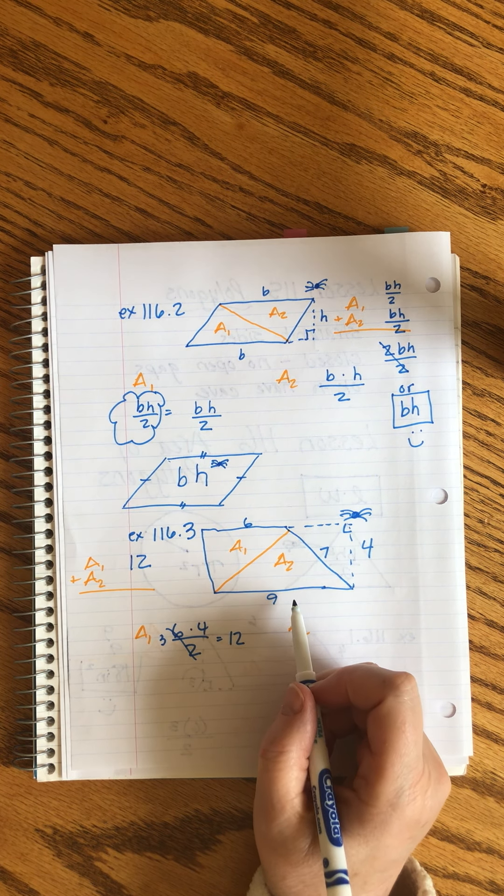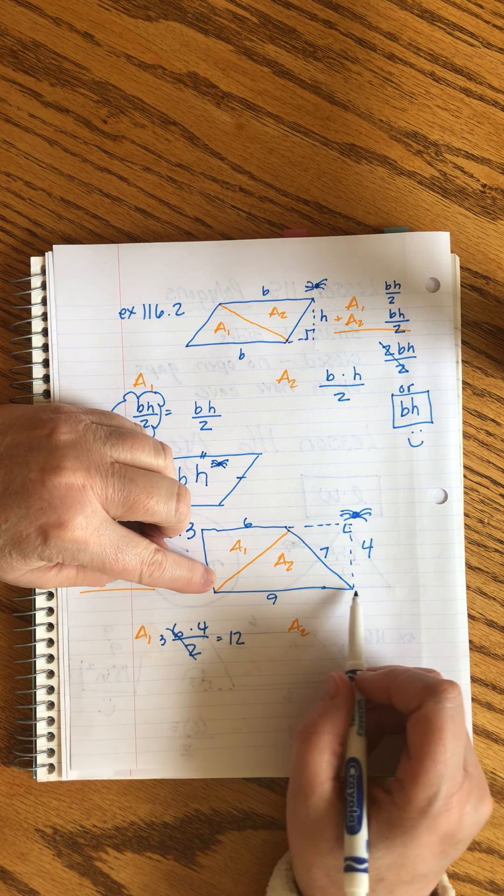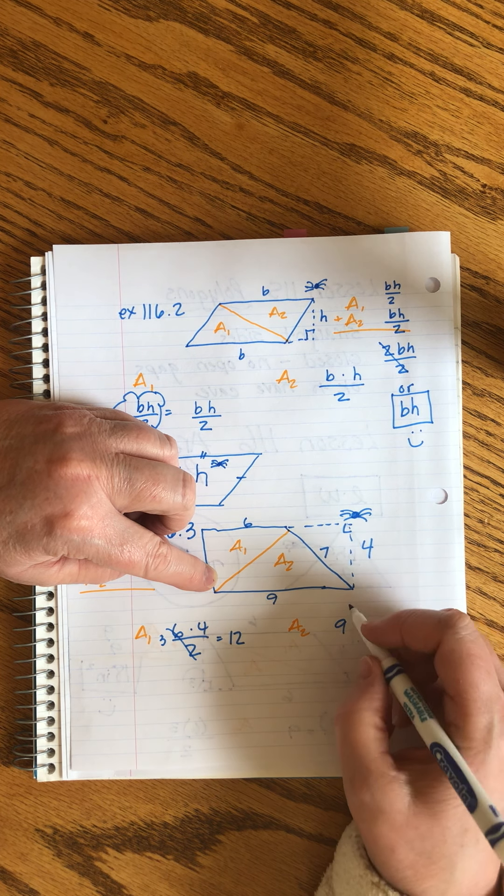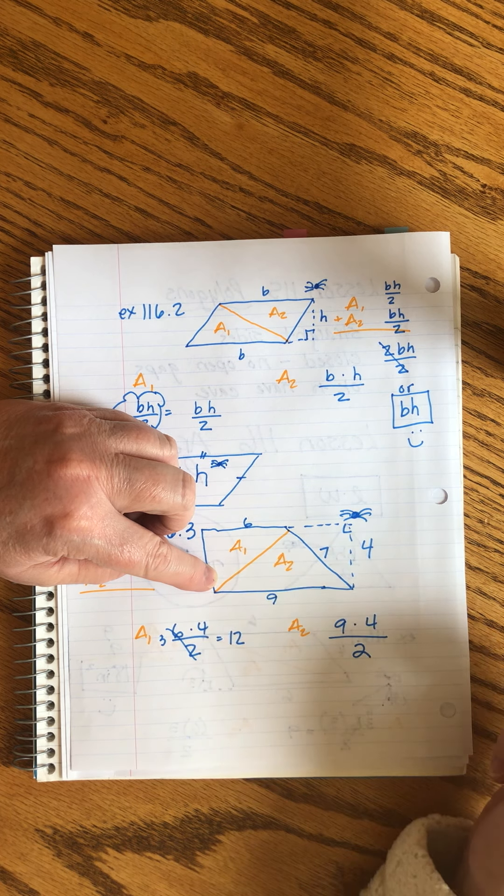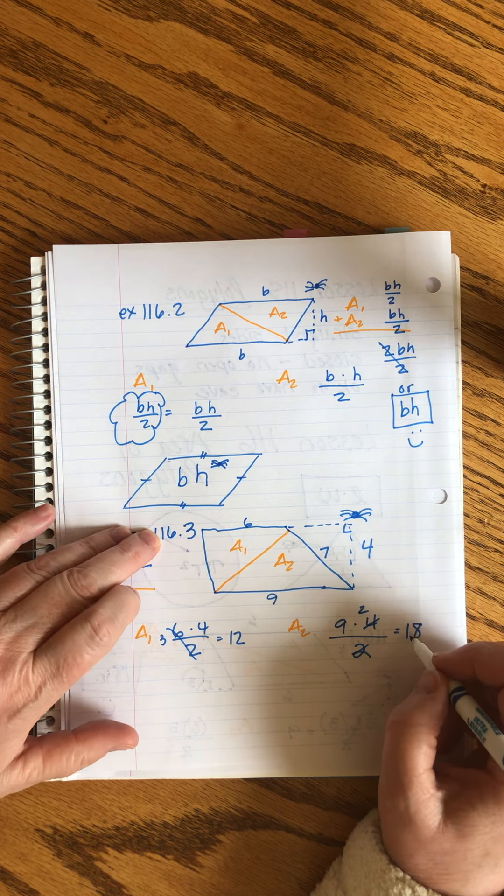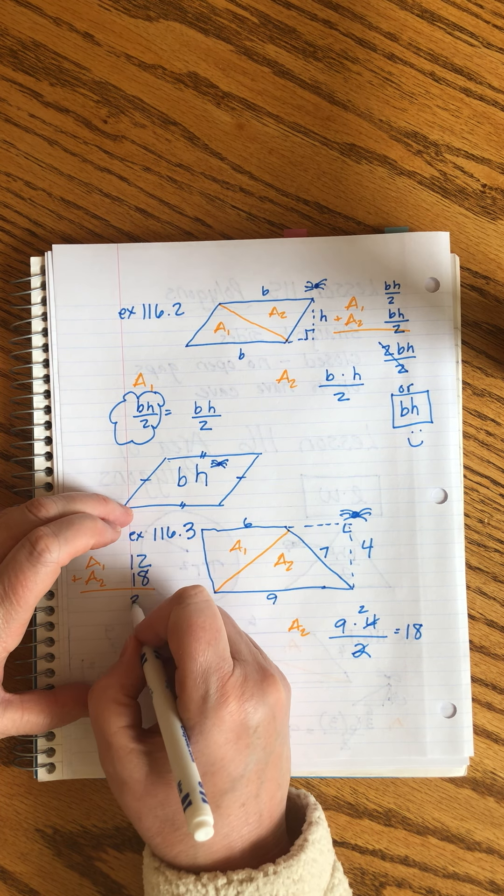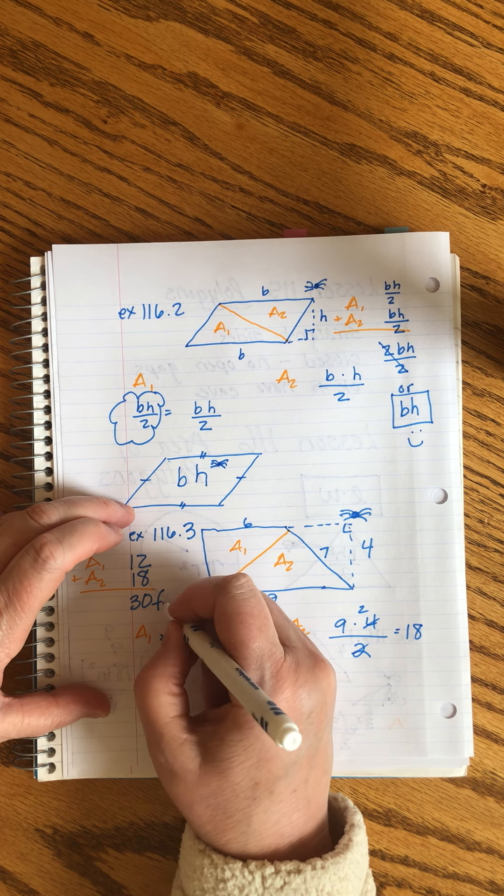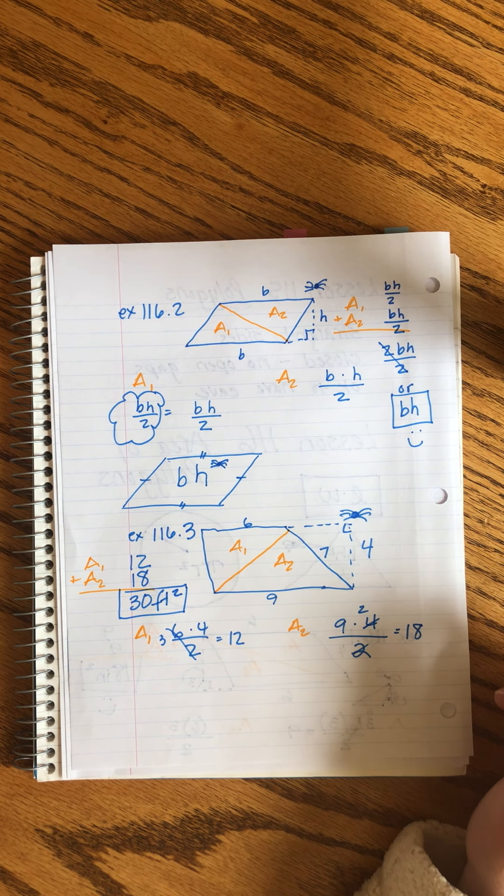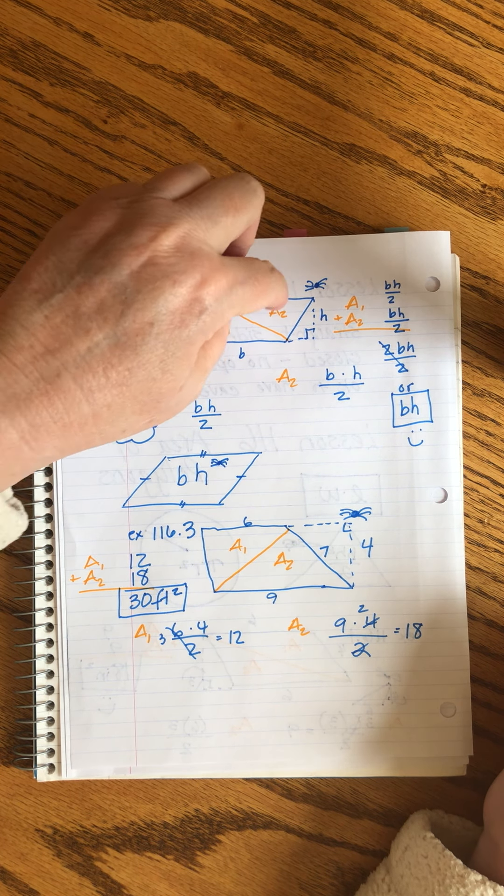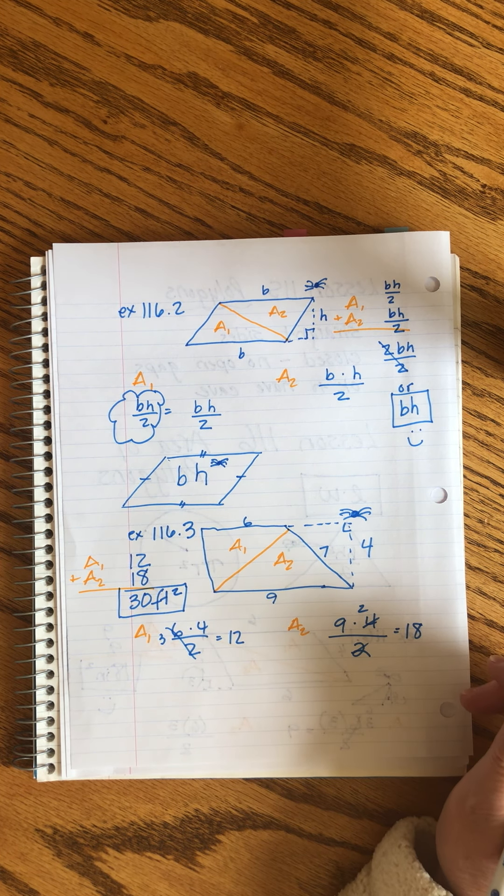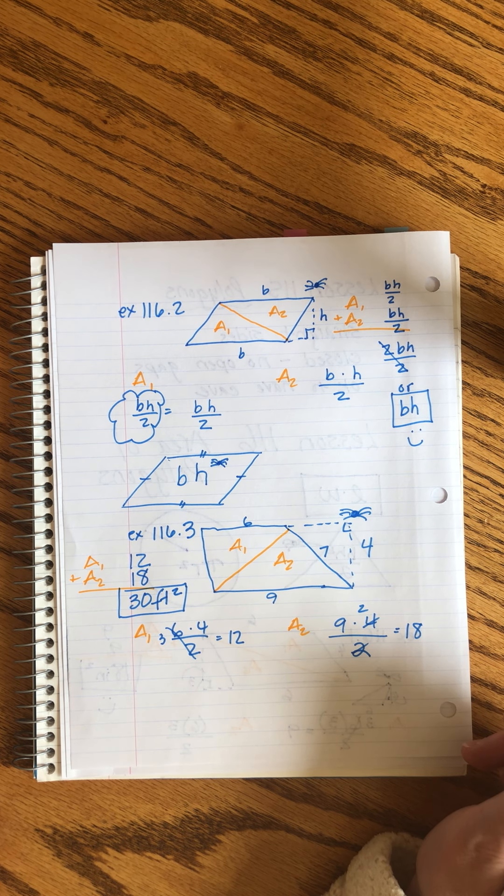This one. Now, remember, this is a trapezoid, so our numbers are not going to be the same. This base is nine. The seven. No, that's not helpful to me. I need the spider's distance. That's four. So it's nine times four divided by two. This equals 18. So when I add them together, what are our units? Feet. Just look in the problem. And it's squared because it's area. So with a parallelogram, the two triangles will always be equal. With a trapezoid, the two triangles will not be equal. And so it's a little more random.